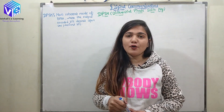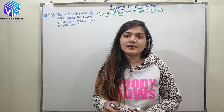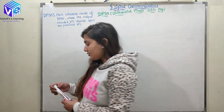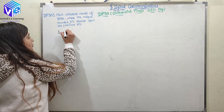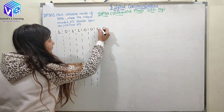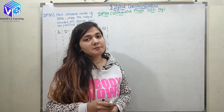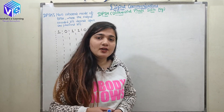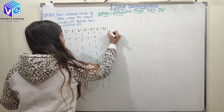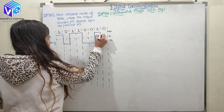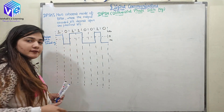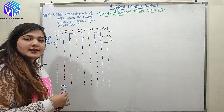DPSK is the non-coherent mode of PSK, where the output bit in the encoded signal depends upon the previous bit as well. Let's take an example to understand DPSK. We'll take some digital bits as our data. In PSK, we require polar NRZ representation of the digital data. In polar NRZ representation, 1 is represented with positive VCC and 0 is represented with negative VCC. This is the polar NRZ line encoding of the digital data.